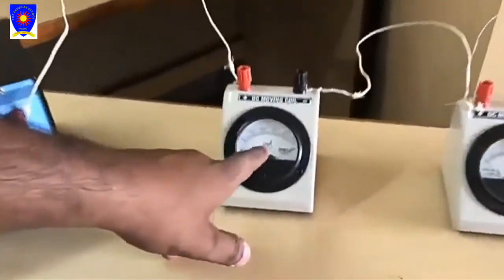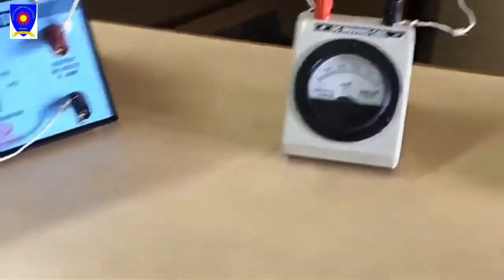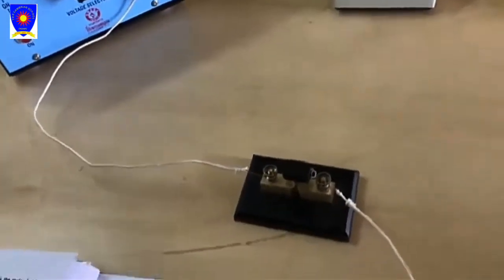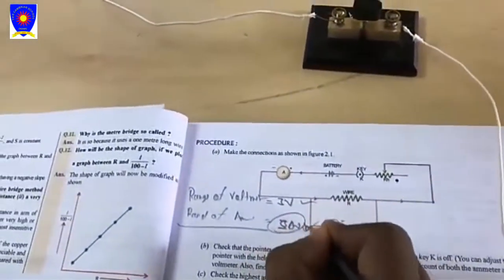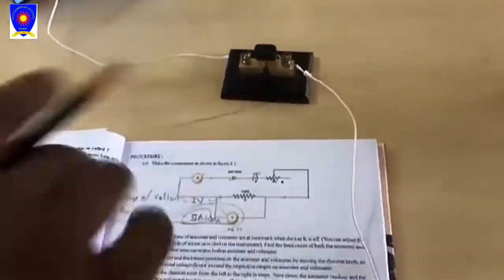It will provide us DC supply. This is an ammeter, sorry, milliammeter, and its range is 500 milliampere. Range of ammeter is 500 milliampere. You can also change this to ampere - it will be 0.5 ampere.